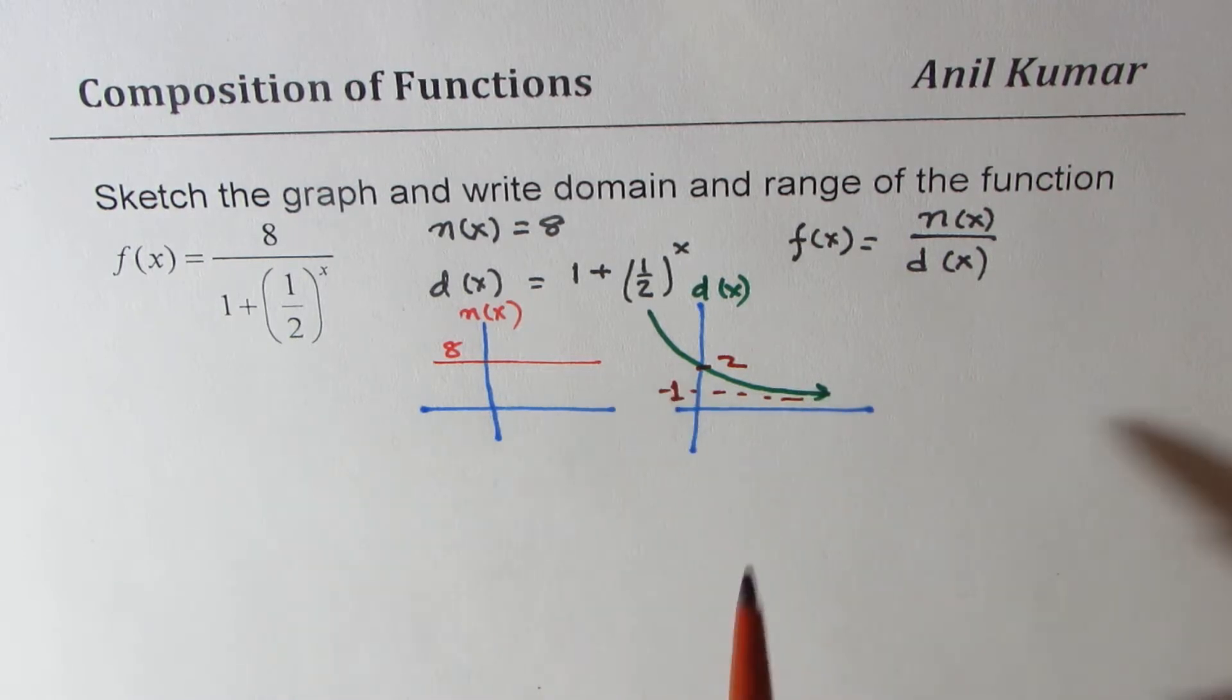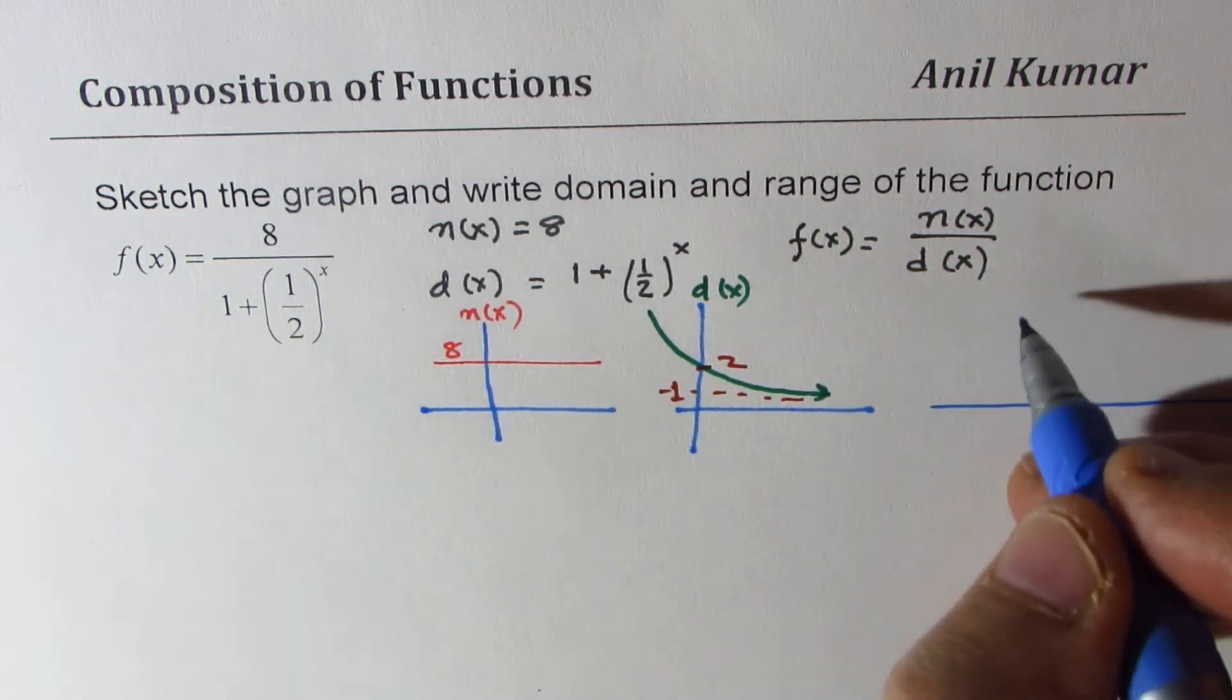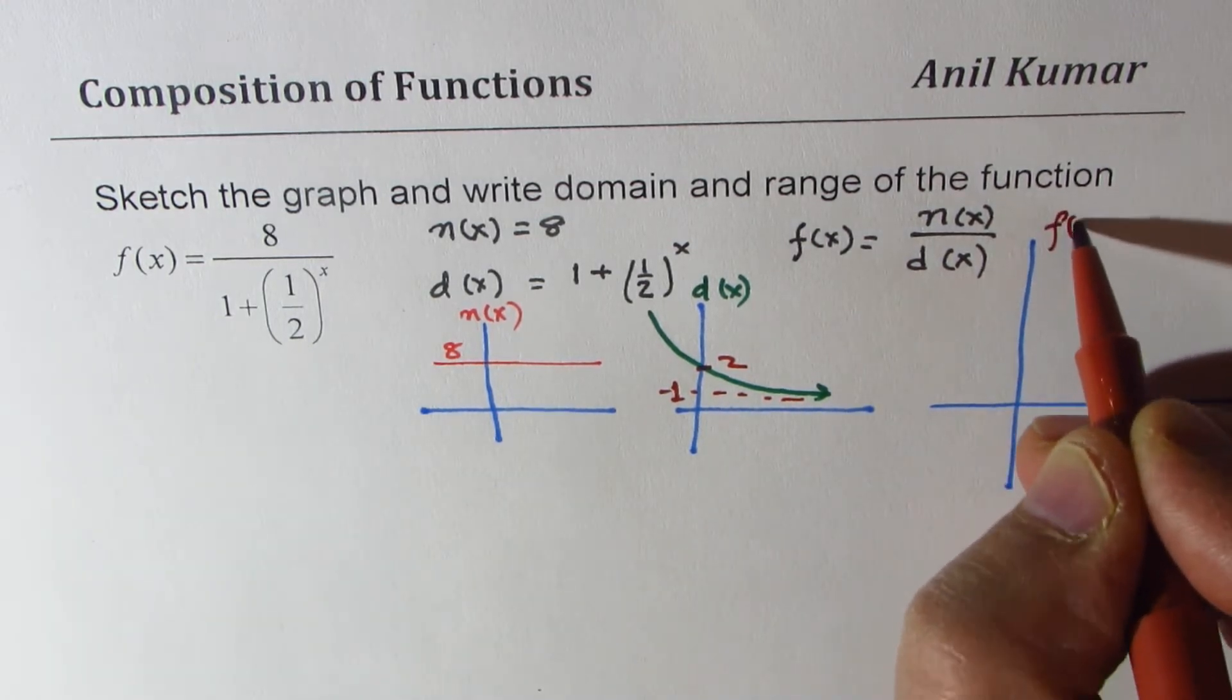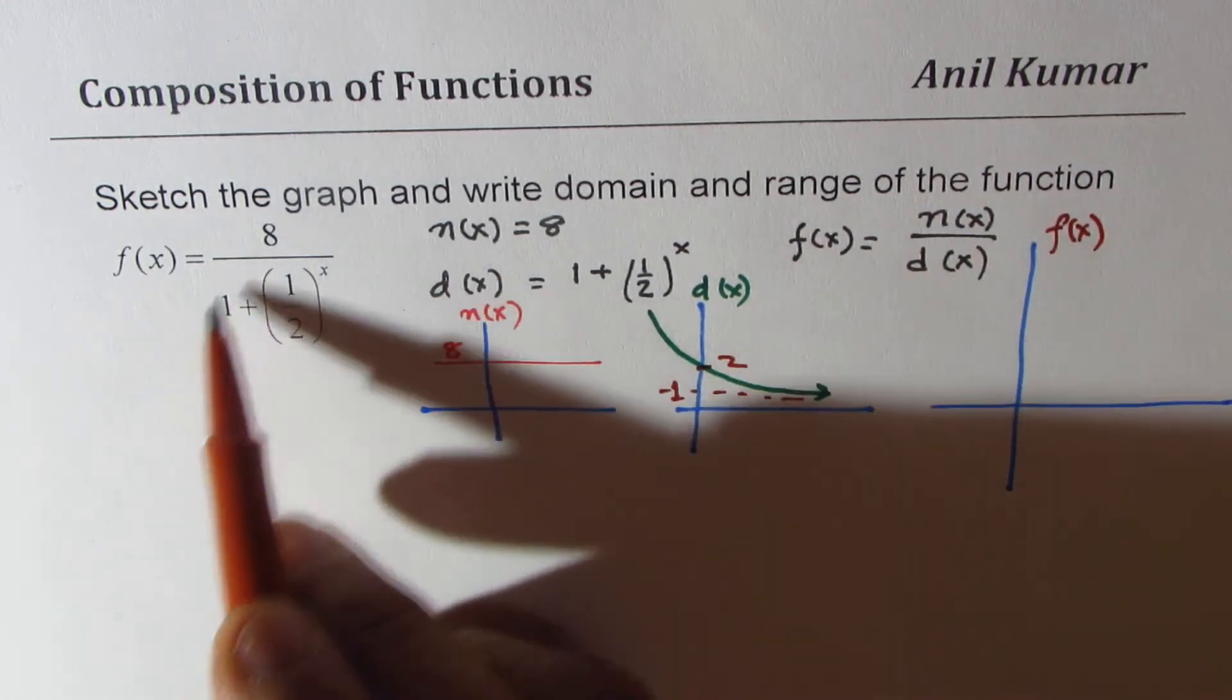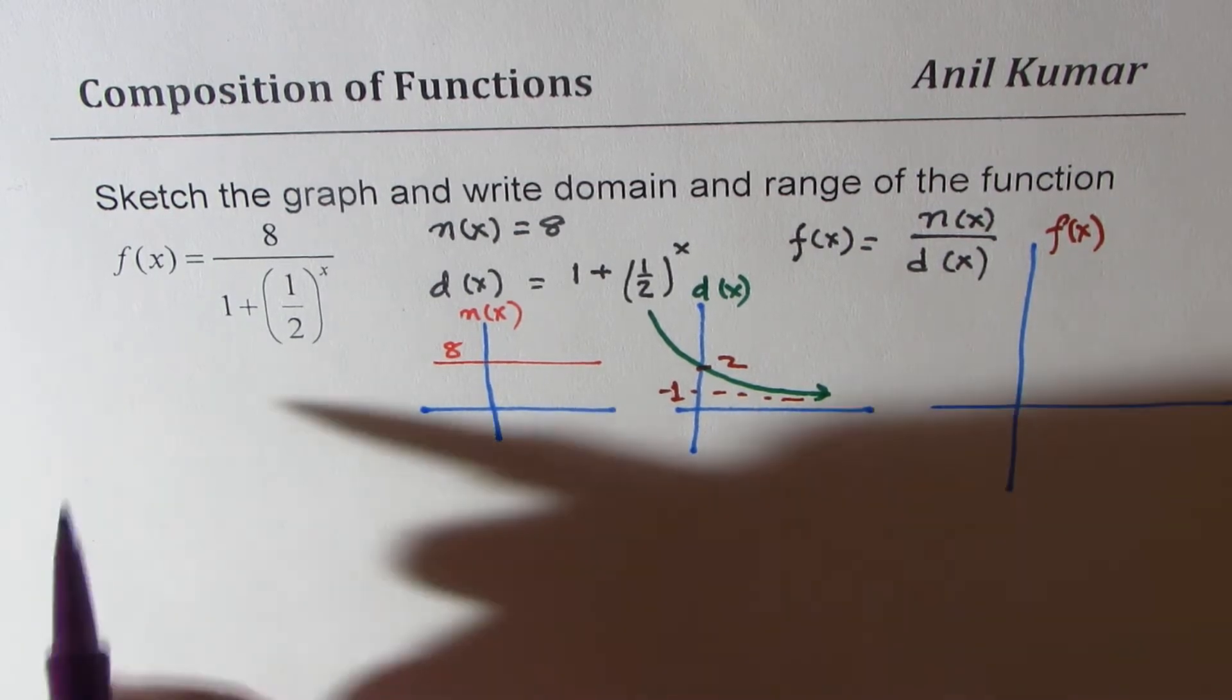So these are the two functions and when we divide one by the other we get f(x) which is 8 over this. So what we notice here is if I try to sketch, if I take some values, let's take some values.